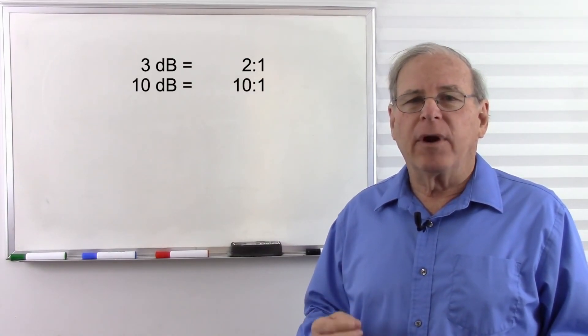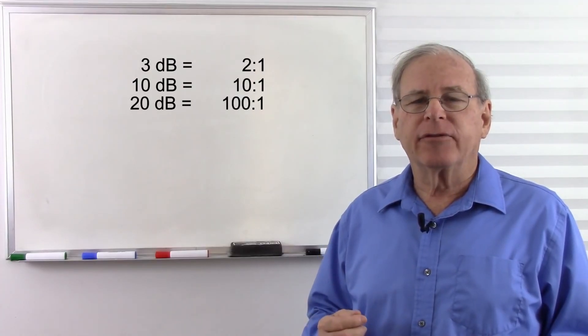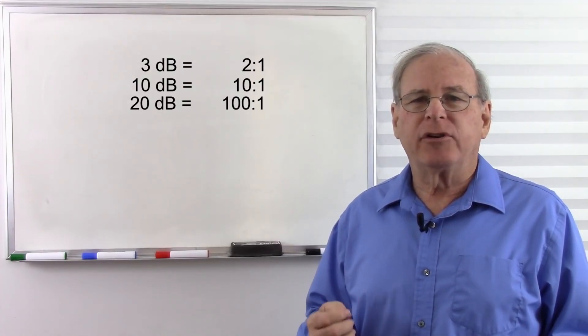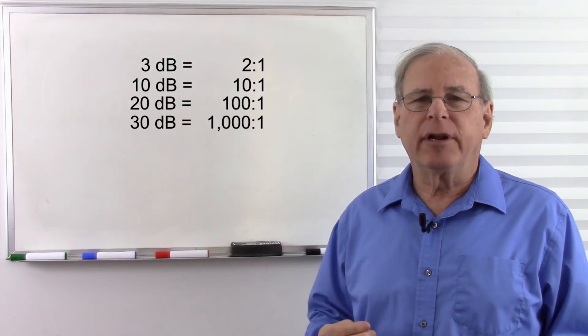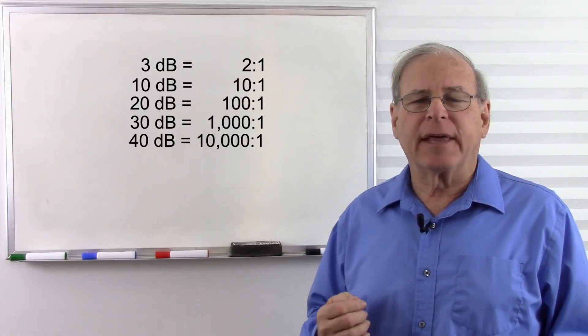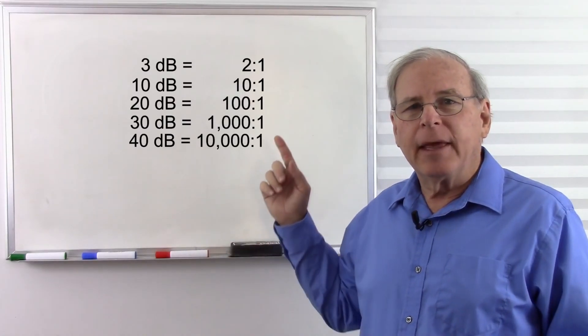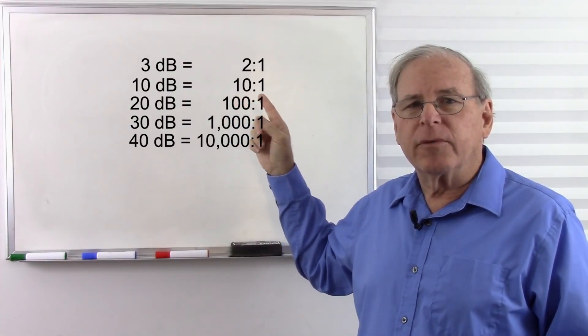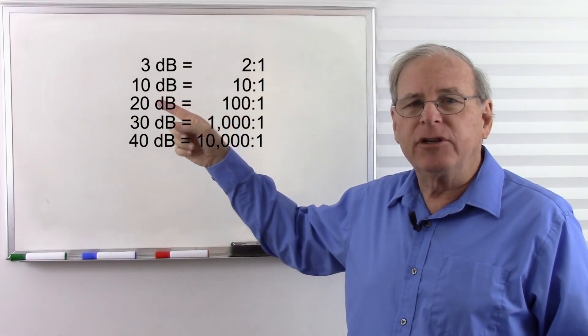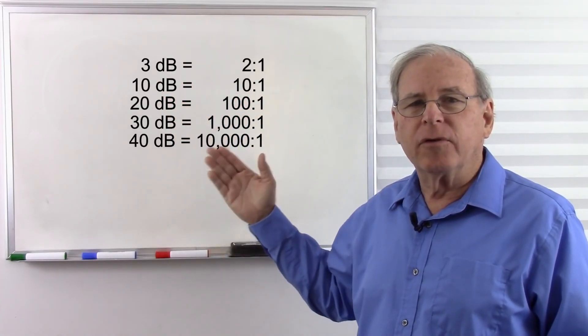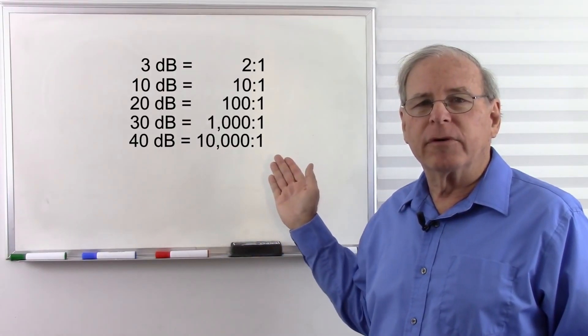And we carry that further. A ratio of 100 to 1 is 20 decibels. A ratio of 1,000 to 1 is 30 decibels. And a ratio of 10,000 to 1 is 40 decibels. Do you see a pattern emerging here? If we look at the number of zeros in the ratio, it equals the first digit in the number of decibels. So 40 decibels is 1 followed by 4 zeros.